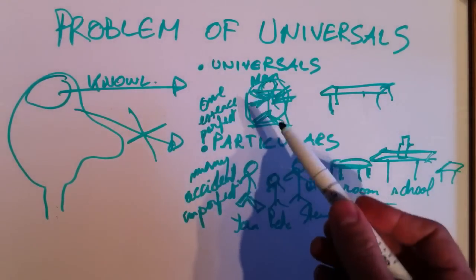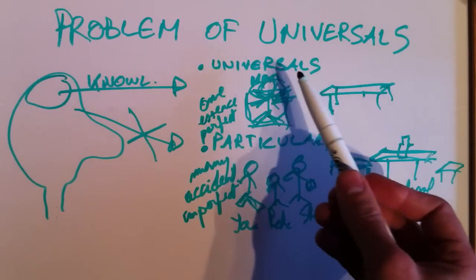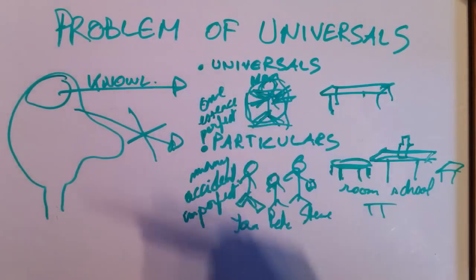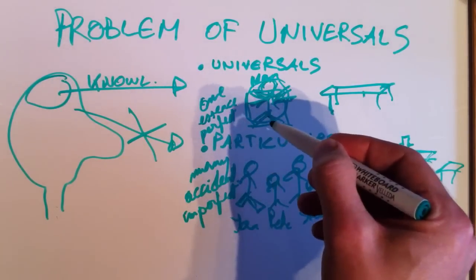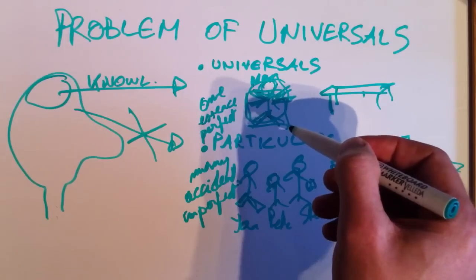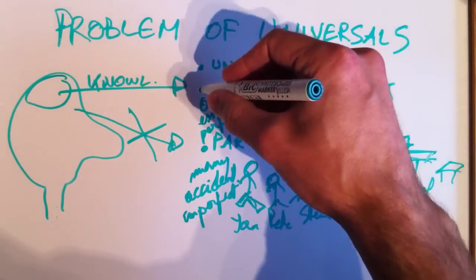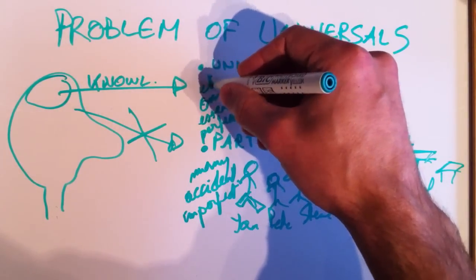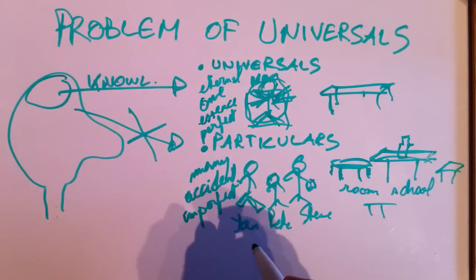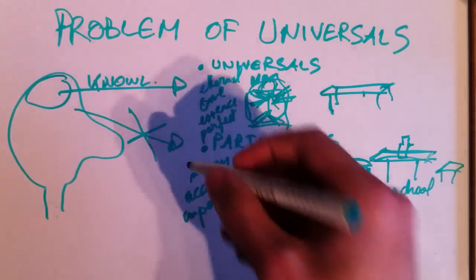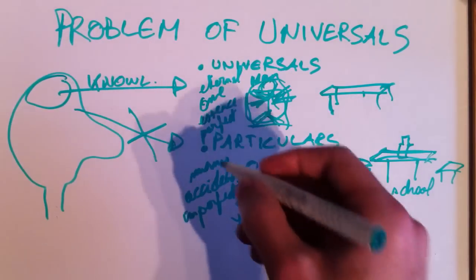There's actually one more characteristic that I could add to universals, and namely, man will always be man, so it's in a sense eternal, while Jan, he will not always be Jan, he will change, and he will die at a certain moment.